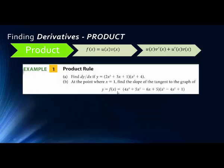Now let's look at problem B. Here we have larger polynomials, but notice we're trying to find the slope of the tangent, which is the same as finding the derivative at a specific point. What's nice is that since we're looking for a specific value, as soon as we apply the product rule, we can plug in 1 for x and skip the foiling and simplification.